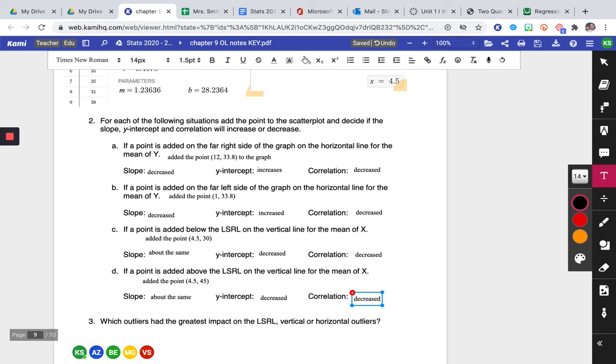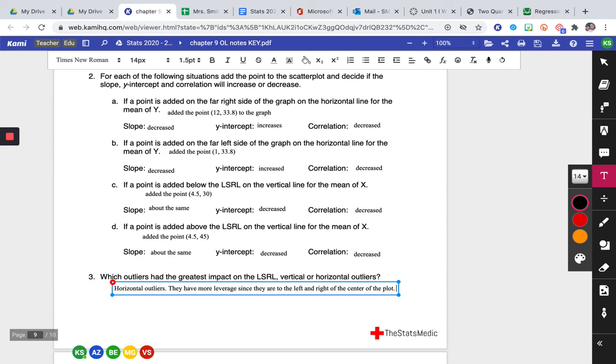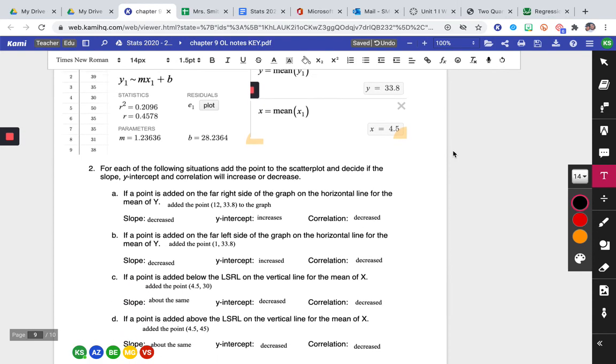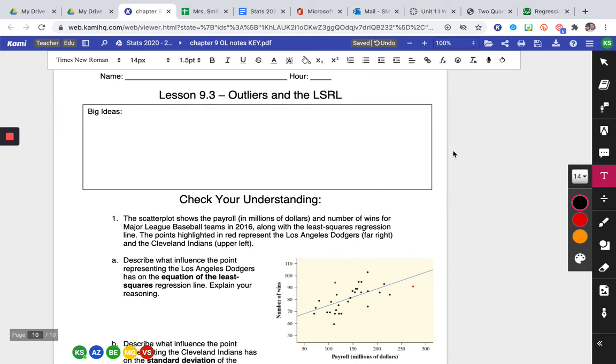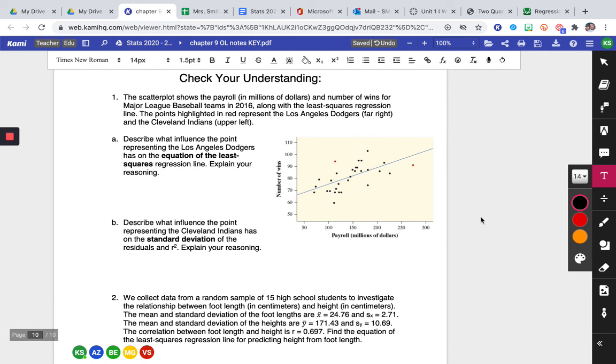So which outliers had the greatest impact on the least squares regression line? The vertical or the horizontal outliers? If you go back and look, we can see that the horizontal outliers did. They have more leverage since they are to the left and right of the center of the plot. So go back and play around with some more data points in this Desmos, or if you're more comfortable, you can play around with the staplet version. Your teacher will move on and give you some big ideas, and we'll finish out Chapter 9 with checking your understanding for regression and correlation. Have a great day.